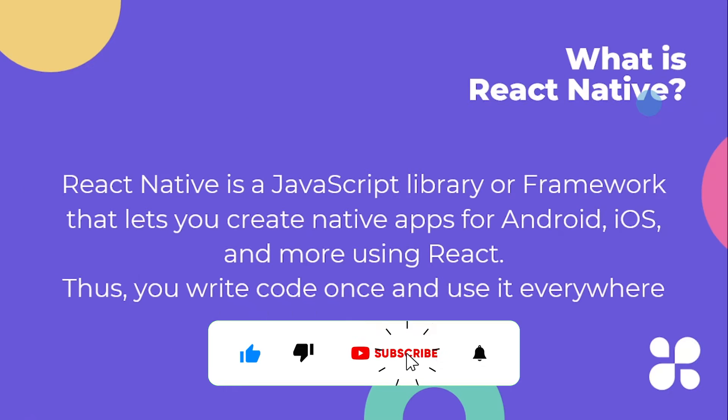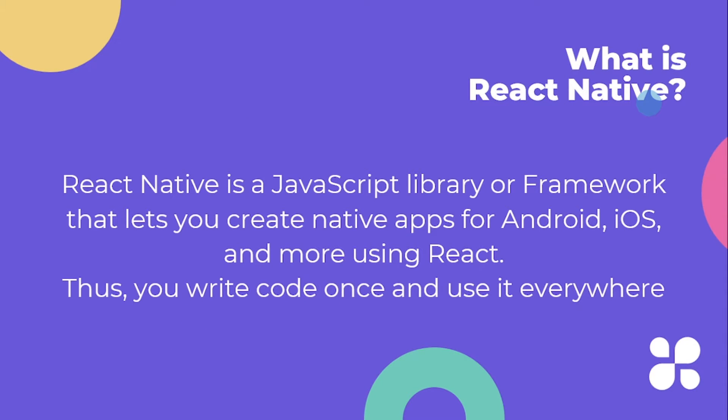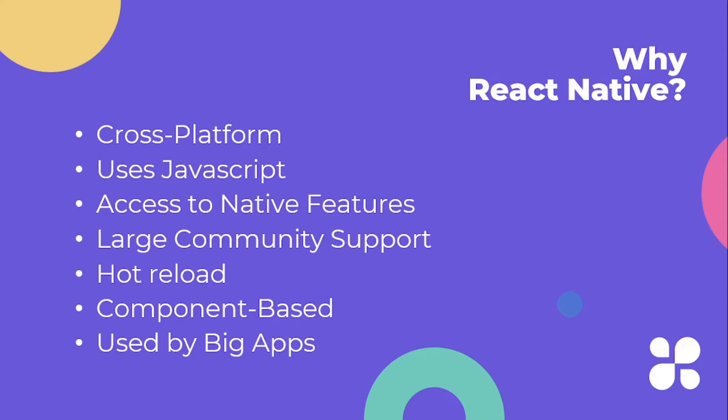So what is React Native? Essentially, React Native is a JavaScript framework or library that is used to build mobile applications — but it's used to build apps for both iOS and Android. You can write code that works well on both Android and iOS, which comes down to the philosophy of write once and use everywhere.